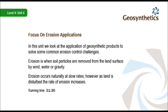This unit is aimed at final year civil engineering students. In this unit we look at the application of geosynthetic products to solve some common erosion control challenges. Erosion is when soil particles are removed from the land surface by wind, water, or gravity. Erosion occurs naturally at slow rates. However, as land is disturbed the rate of erosion increases.